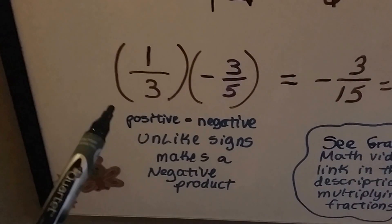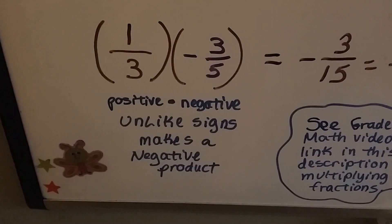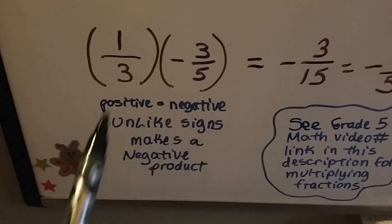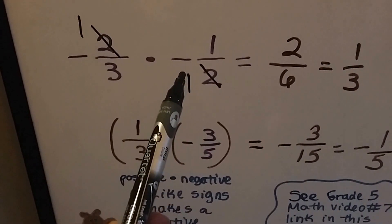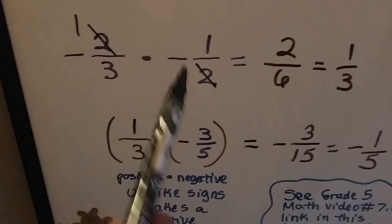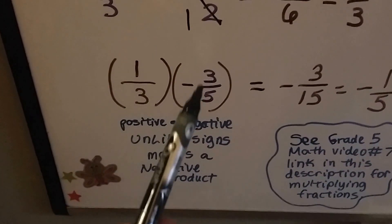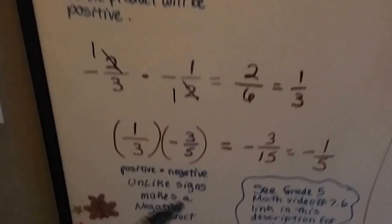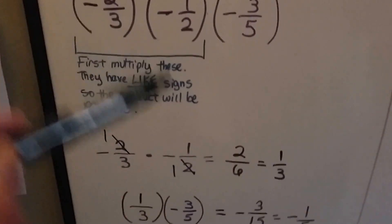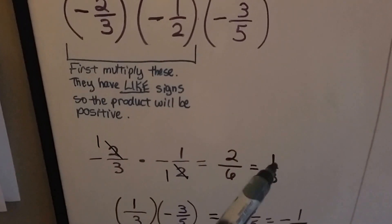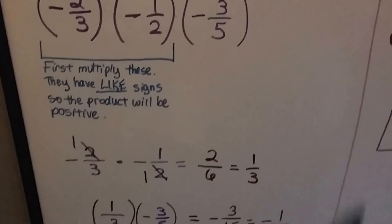When we have a positive and a negative rational number, unlike signs make a negative product. Both of the first two fractions had negative signs, so because the signs were the same — they were like — we got a positive answer. We multiplied negative two-thirds times negative one-half, and since both were negative, we got a positive one-third. Now we need to multiply this positive one-third by negative three-fifths to finish all three.